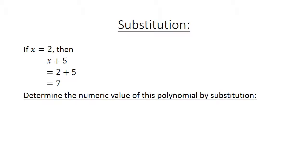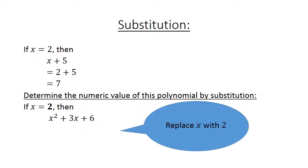Determine the numeric value of this polynomial by substitution. If x equals 2, then we have the polynomial x to the power of 2 plus 3x plus 6. Replace x with 2, and we do this by using brackets. 2 to the power of 2 plus 3.